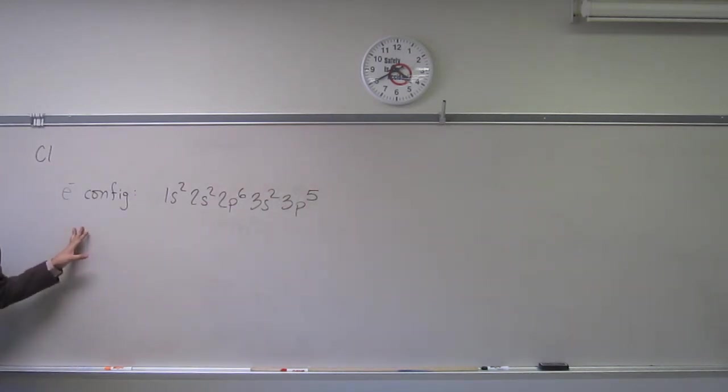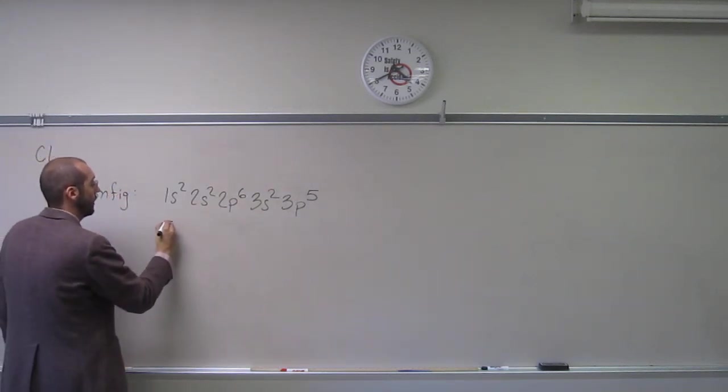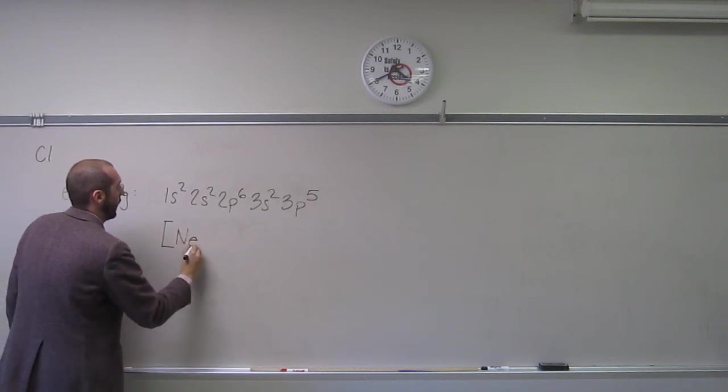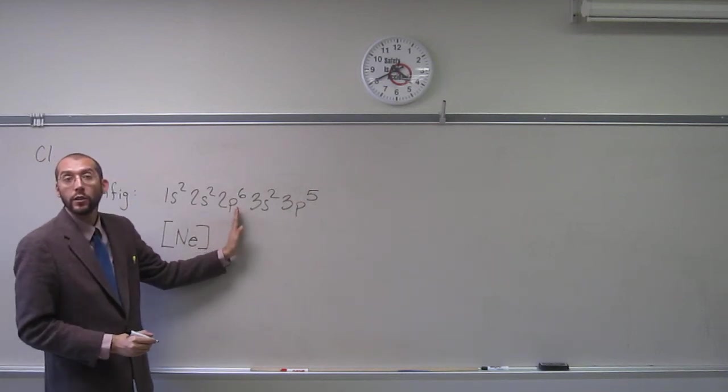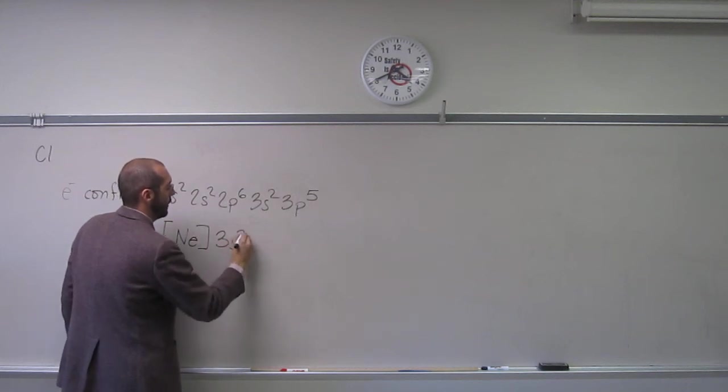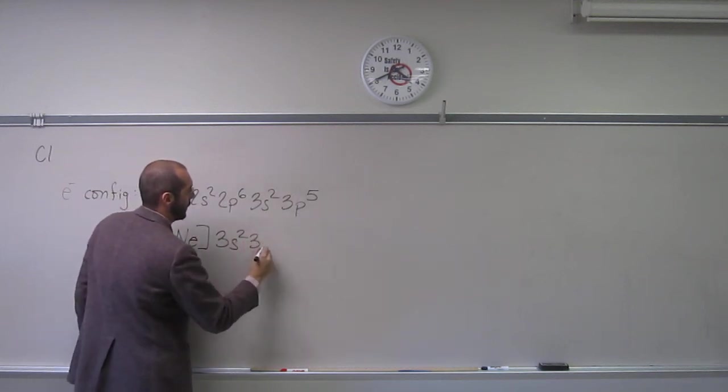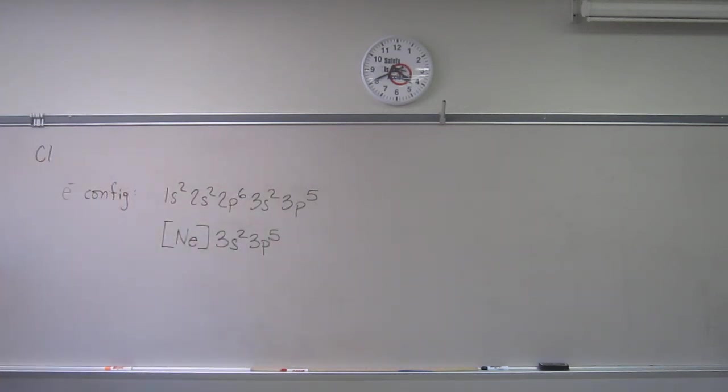So, if I wanted to do the noble gas electron configuration, what would that be? So remember, I take the noble gas that's the one before chlorine, so in this case it would be neon, and then I'd write everything after neon. So neon is up to 2p6, isn't that the case? If you don't know, or you think that's crazy, you better look at the periodic table. So we've got that. That's the condensed, or noble gas, or abbreviated electron configuration.